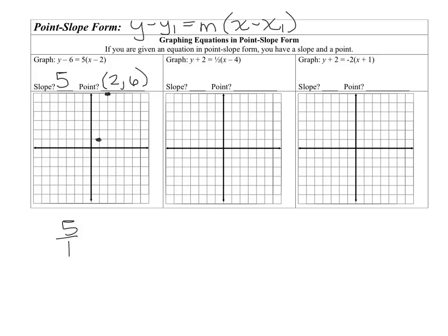We do it again — down 5 and left one — and there you have it. This form tends to be one that lots of people forget about, but it's super simple. Sometimes people try to change point-slope form to slope-intercept form, but then you might find the y-intercept doesn't fit on the graph. So make sure you remember this form. We're also going to use this form later to write equations.